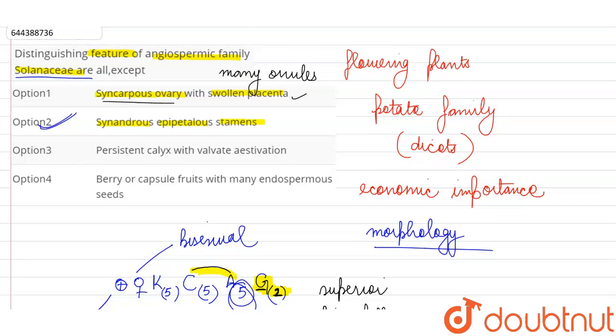If we look at the other options, persistent calyx - yes, even in the fruit we are able to see the remnants of the sepals. And aestivation is valvate.